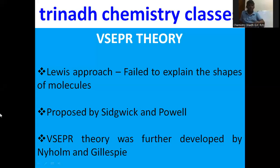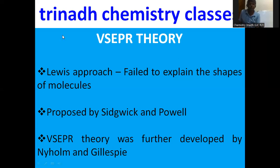We know that Lewis and Kossel were able to explain the formation of chemical bonding based on valency electrons, but the Lewis approach or octet theory failed to explain the shapes of molecules. Similarly, there are certain molecules whose central atom has less than 8 electrons, and similarly the central atom has more than octet — an expanded octet. These things failed to be explained by the Lewis approach.